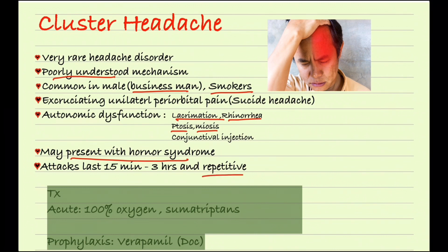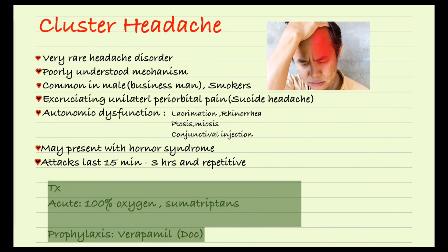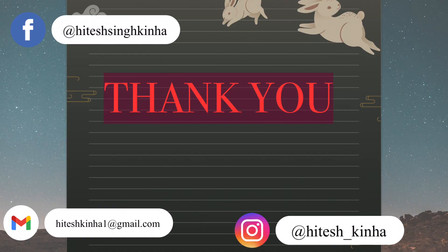Cluster headache attacks usually last from 15 minutes to 3 hours, and the attacks are repetitive — the patient may face the same attacks every 30 minutes to one hour. For acute treatment we use 100% oxygen and sumatriptan. For prophylaxis, the drug of choice is the calcium channel blocker verapamil, which is used to prevent attacks.